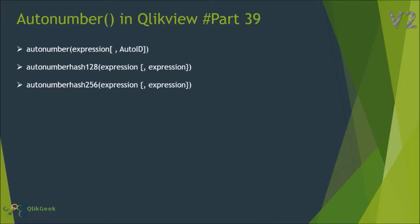Welcome to Click Geek. In this session we'll see how the AutoNumber function works in QlikView and its significance. It also has two sister functions: AutoNumber Hash 128 and AutoNumber Hash 256. The name is self-explanatory — it generates a number based on the expression and ID you specify. All AutoNumber functions expect at least one parameter, but you can leverage up to two.